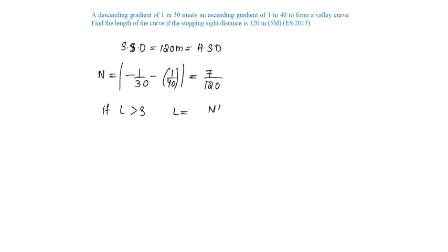length of valley curve is N squared by 2 into H1 plus 2S tan alpha. Alpha is 1 degree, length of light beam, and its height is 0.75 meters.